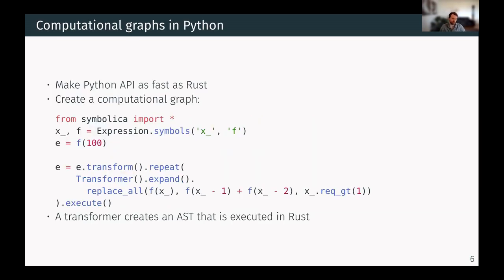So I mentioned the Python API, but Python of course is very slow. So we want to do as little work as possible in Python itself. For this, you can create computational graphs with Symbolica, which generates instructions that should be executed by Rust in the end.